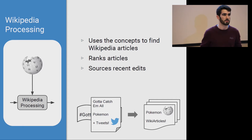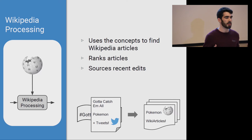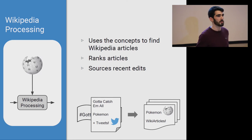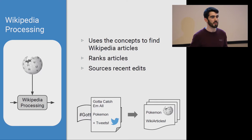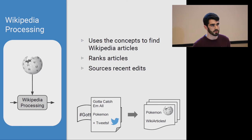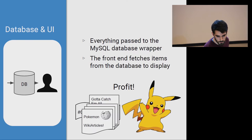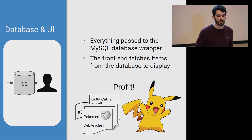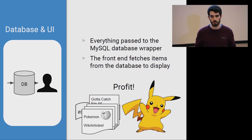The Wikipedia processing module is akin to the Twitter processing module except for Wikipedia articles. It uses the concept list to try and find related articles. So we'd hope that this module would go, hey Pokemon, there's a Pokemon Wikipedia article, I'm going to add that to my results list. It does this for all of the concepts and gets us articles and edits that we can view. Then finally it passes along to the database and UI modules. Everything gets stored in a big MySQL database and later on the end user can view this through the web UI.